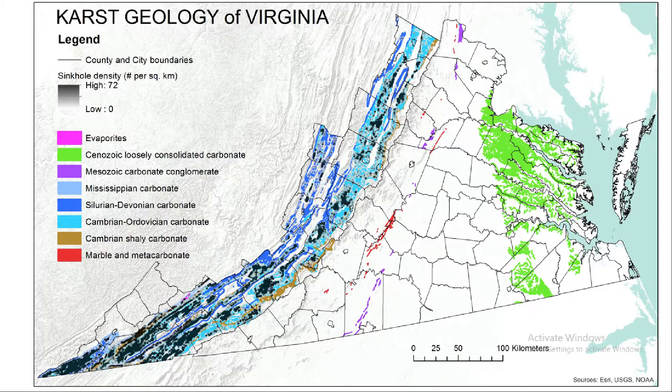As this map of karst geology in Virginia shows, karst is common throughout the valley and ridge province. Rocks in blue are different ages of carbonate rock that are prone to forming karst landscapes and subterranean cave systems.